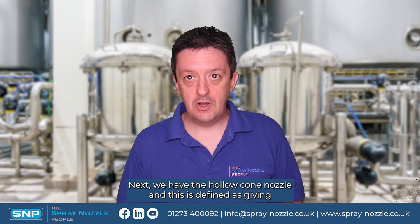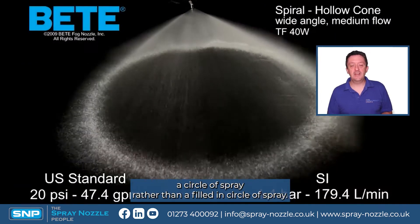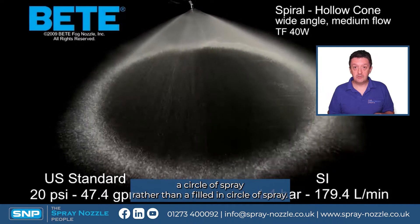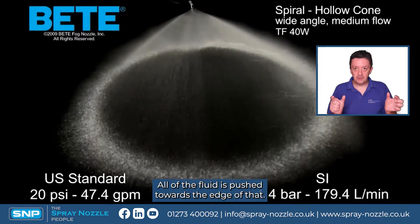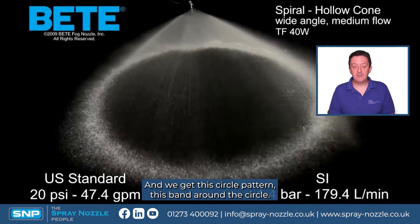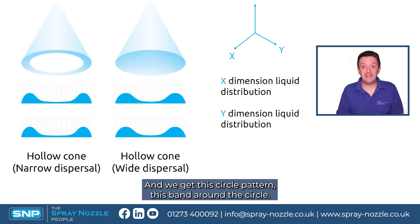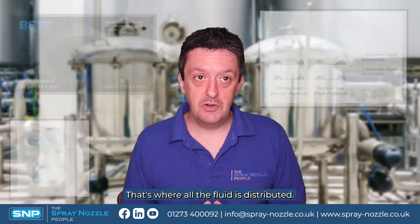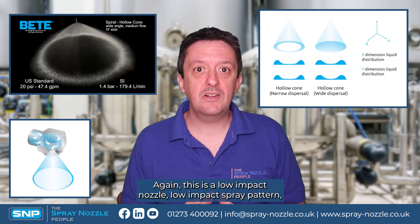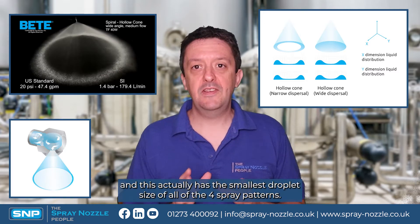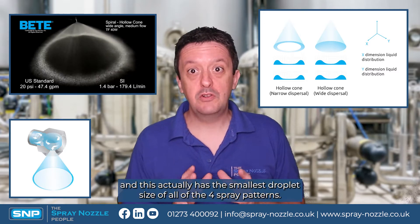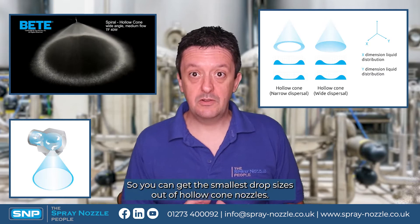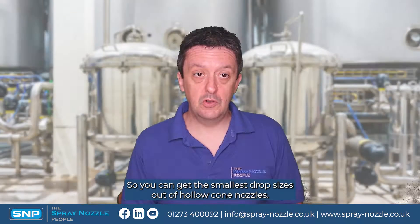Next we have the hollow cone nozzle. This is defined as giving a circle of spray rather than a filled-in circle. All of the fluid is pushed towards the edge, giving a band around the circle — that's where all the fluid is distributed. This is also a low impact spray pattern, and it actually has the smallest droplet size of all four spray patterns — you can get smaller drop sizes out of hollow cone nozzles.